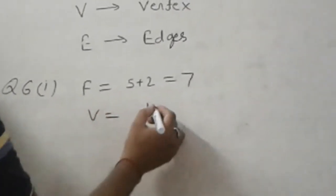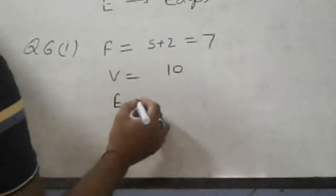Vertex is how many? 10, which is 2n. And edges is how many? 1, 2, 3, 4, 5, 6, 7, 8, 9, 10, and below 5 more.